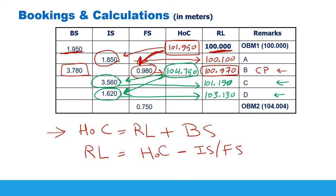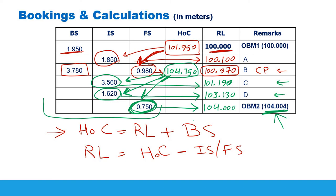Finally, we calculate the reduced level of Ordnance Benchmark 2. Its value is known, but we also calculate it from our measurements to check accuracy. Height of collimation (104.750) minus the fore sight over it (0.750) gives a calculated value of 104.000 meters exactly. The actual known value is 104.004 — we'll use these two numbers to find the accuracy.